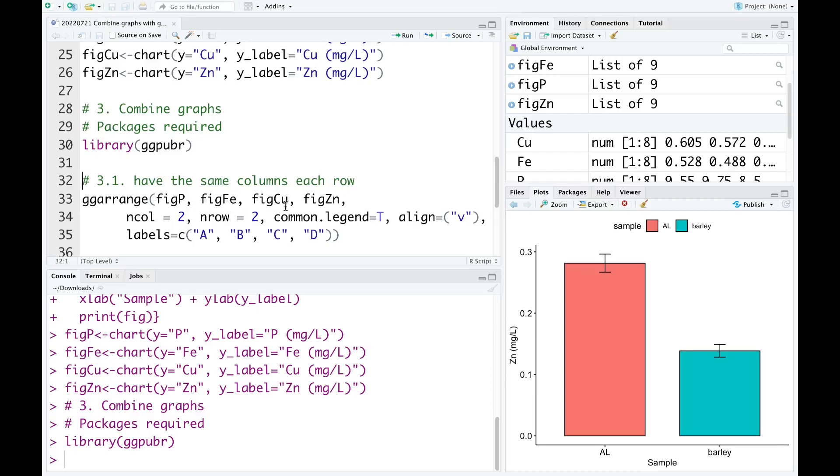fig_Iron, fig_Copper, and fig_Zinc. In this case, we have the number of columns is 2 and number of rows also 2. We have a common legend, so we select TRUE. I also use align vertical. I will show you what align vertical means later. The label for each graph is A, B, C, and D. I run this code now.